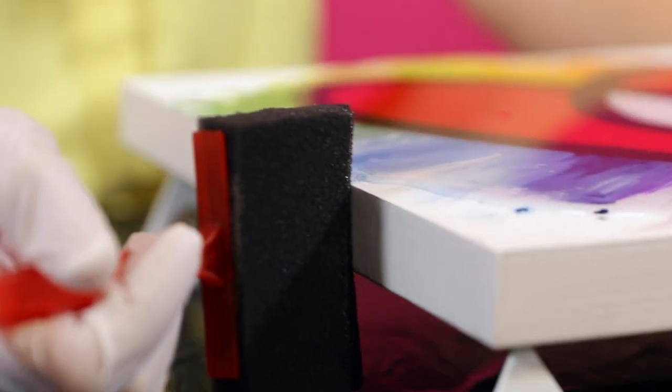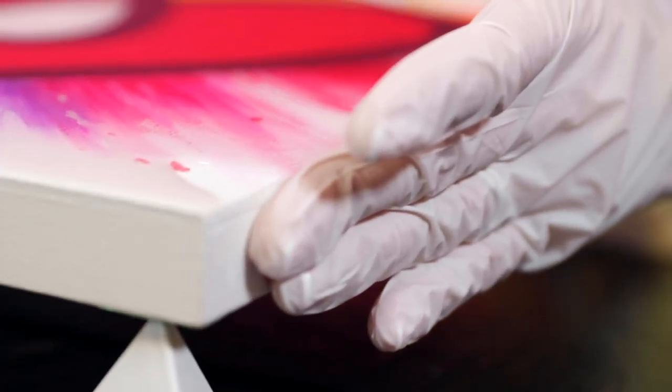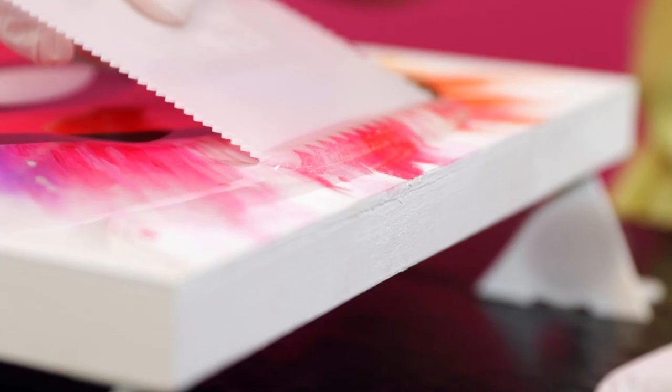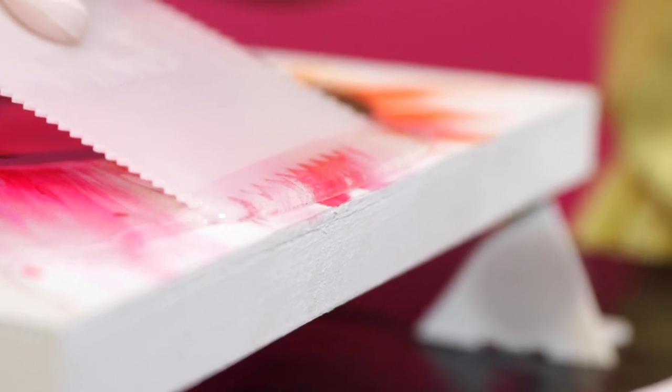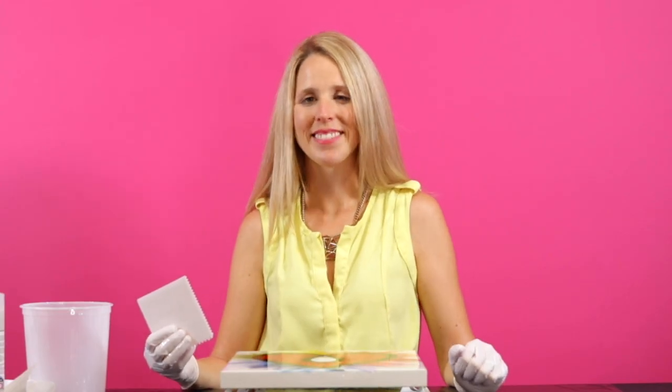You can resin the sides with a disposable brush or your gloved hand, or just let it dome neatly on top. Now you're ready for step 5.